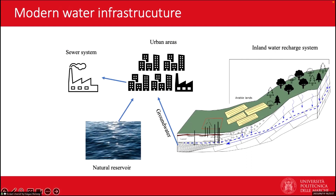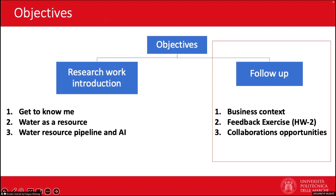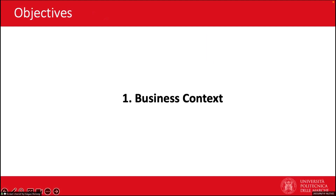Modern water infrastructure — like sewer systems and irrigation — is a complex network of pipes, machines, and gadgets that move water around efficiently, ensuring we have clean water to drink, wastewater is removed, and farmers water their crops properly. There are still numerous problems that are either unsolved, unexplored, or need people from business to make them commercially solvable. We now move on to the second part: from technical AI on the engineering side to the business side — discussing the business context of these problems, homework two, and collaboration opportunities with our lab in Ancona.